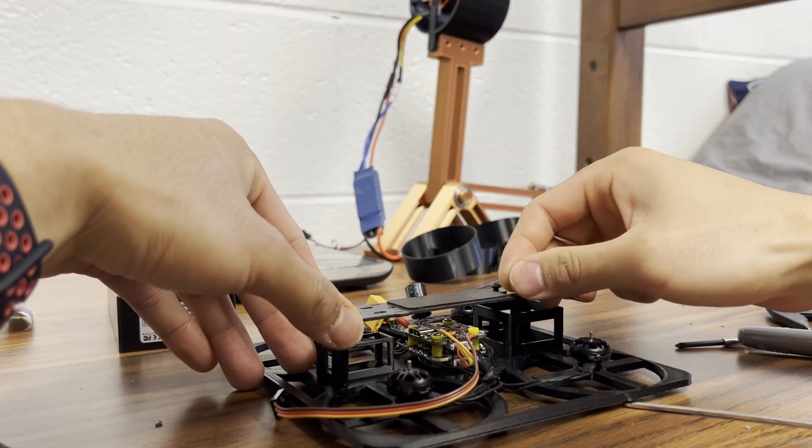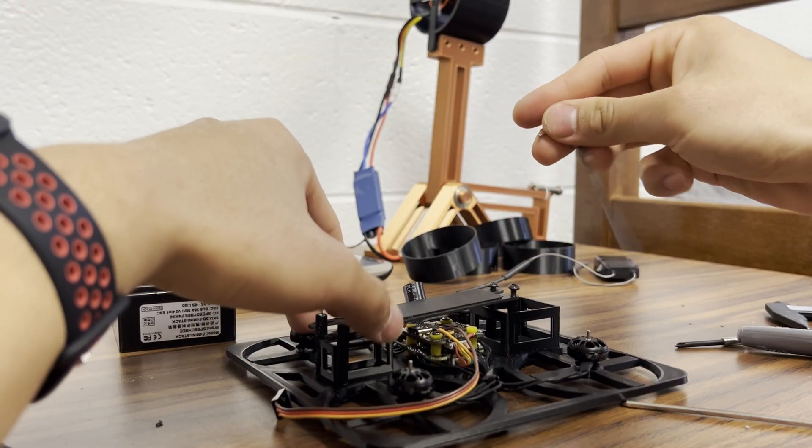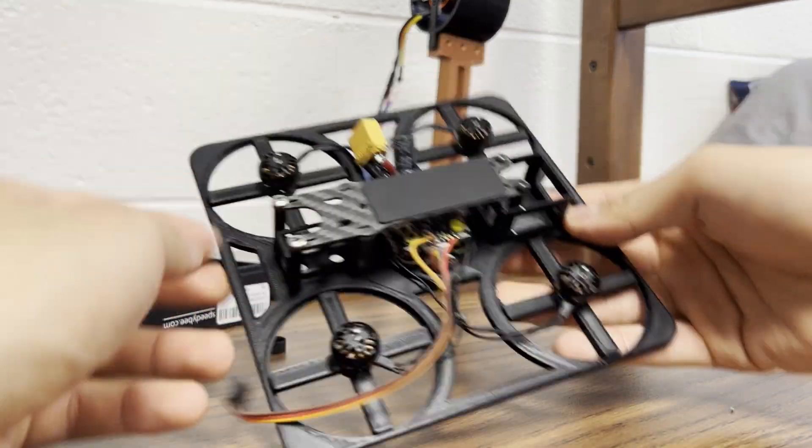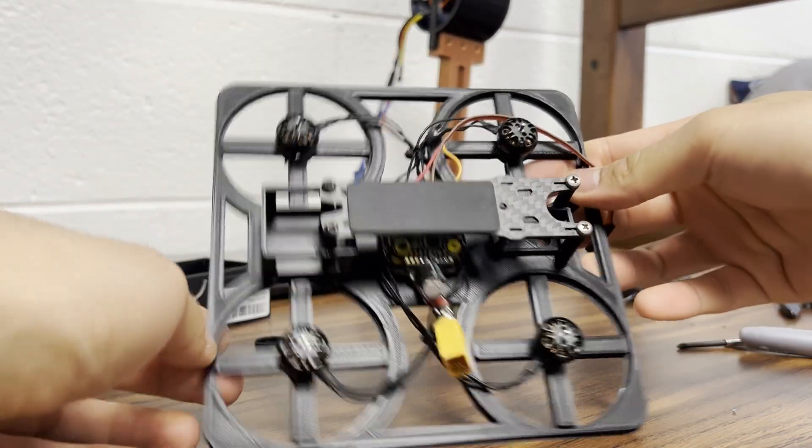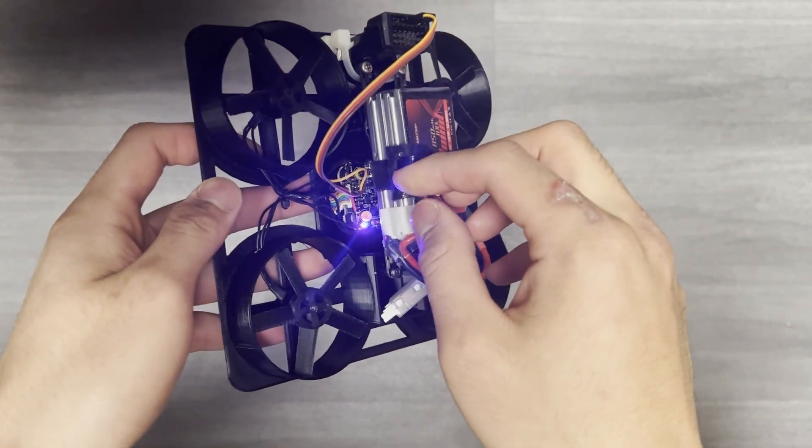I actually didn't have a drill on hand or anything, so I just poked some holes in with my soldering iron and it turned out fine. So I'm now able to put the battery in a pretty optimized place with help from this Velcro strap over here.